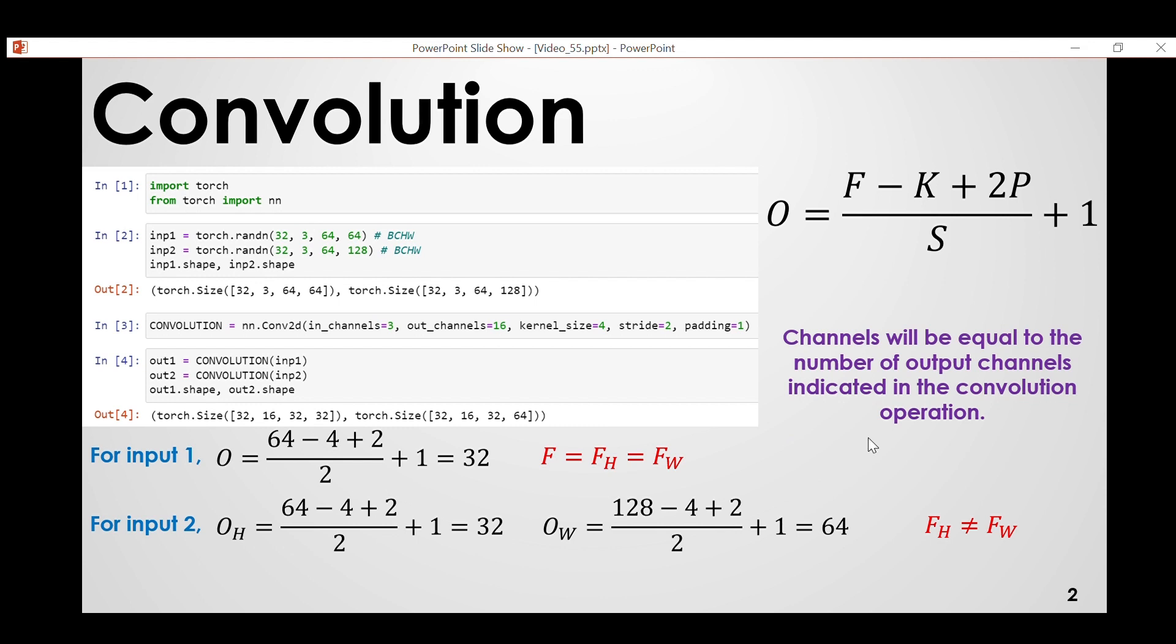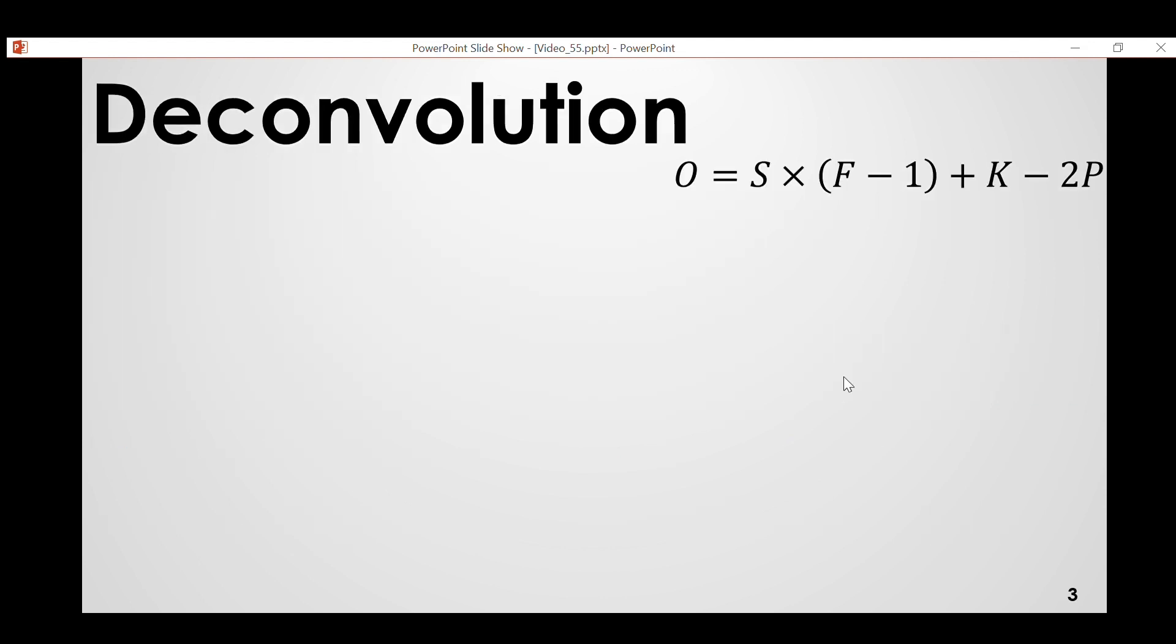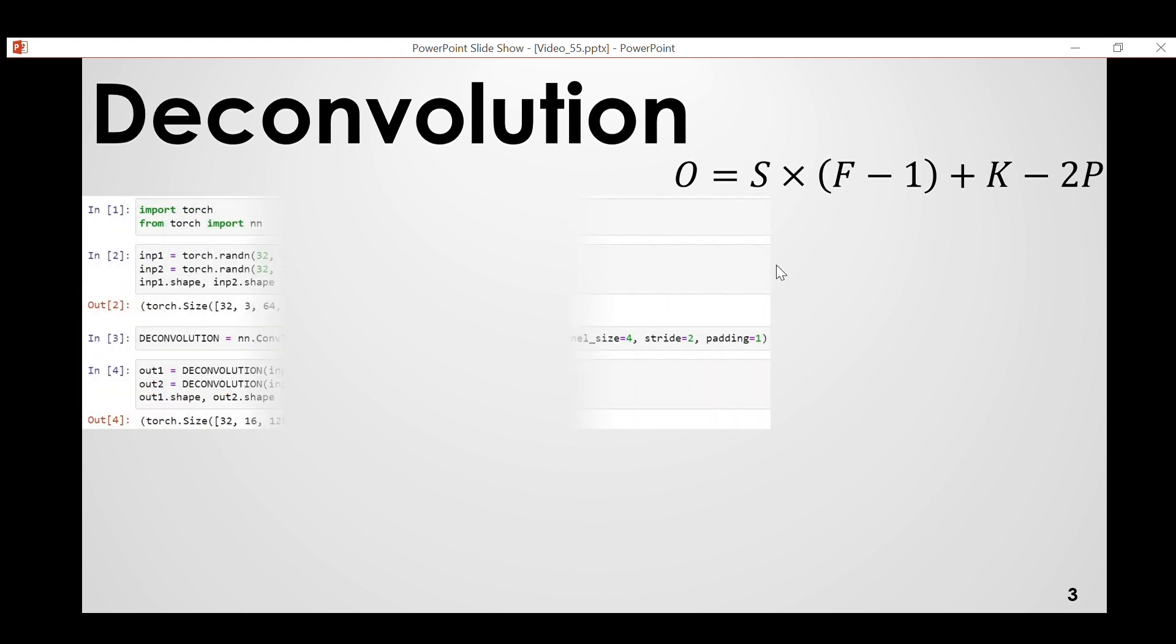So this is how convolution, the output shape of tensor can be calculated using the convolution formula in CNN. Now let's move on to deconvolution. So this is the formula of deconvolution: S multiplied by F minus 1, plus K minus 2P. This is the input shape, kernel size, and padding. Now let's look at the example.